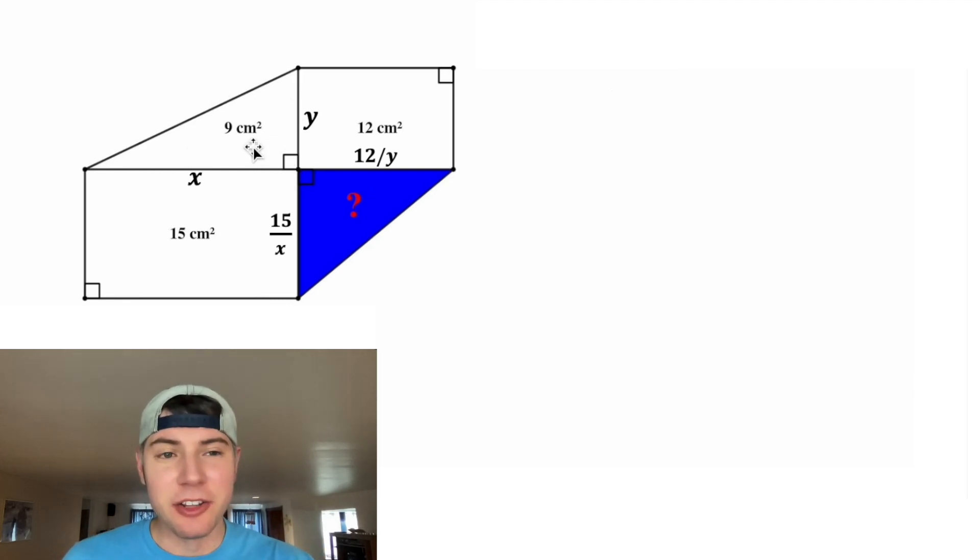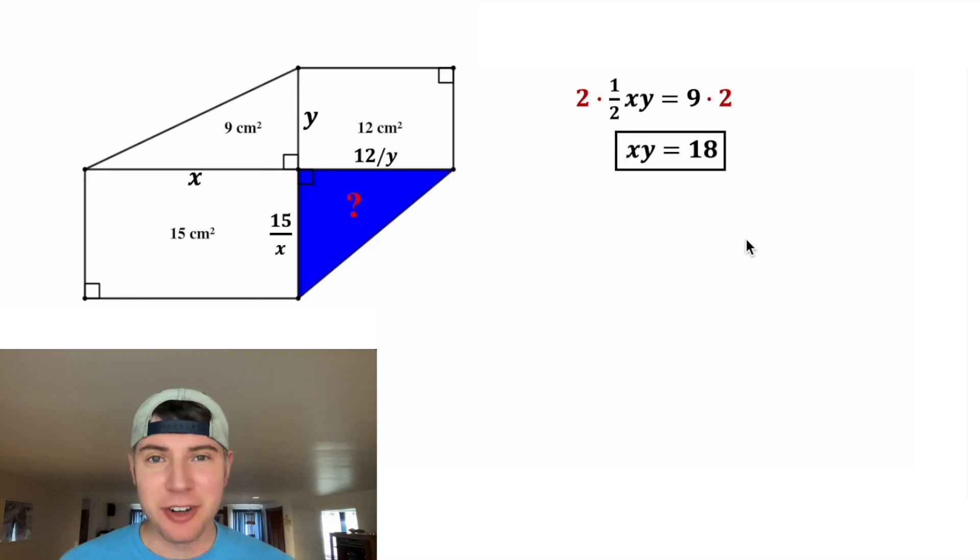Now let's look at this triangle. The area of a triangle is 1 half base times height, so this is going to be 1 half X times Y equals nine. And after we multiply both sides by two, on the left-hand side we get XY, and on the right-hand side we get 18. This looks important, so let's put a box around it.